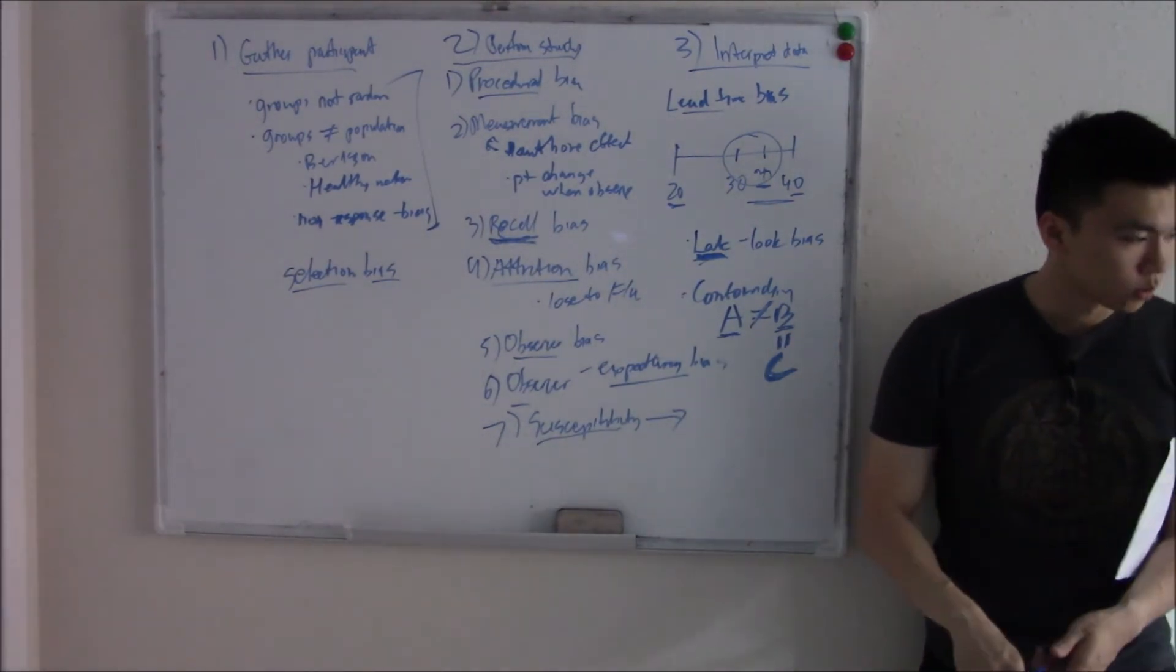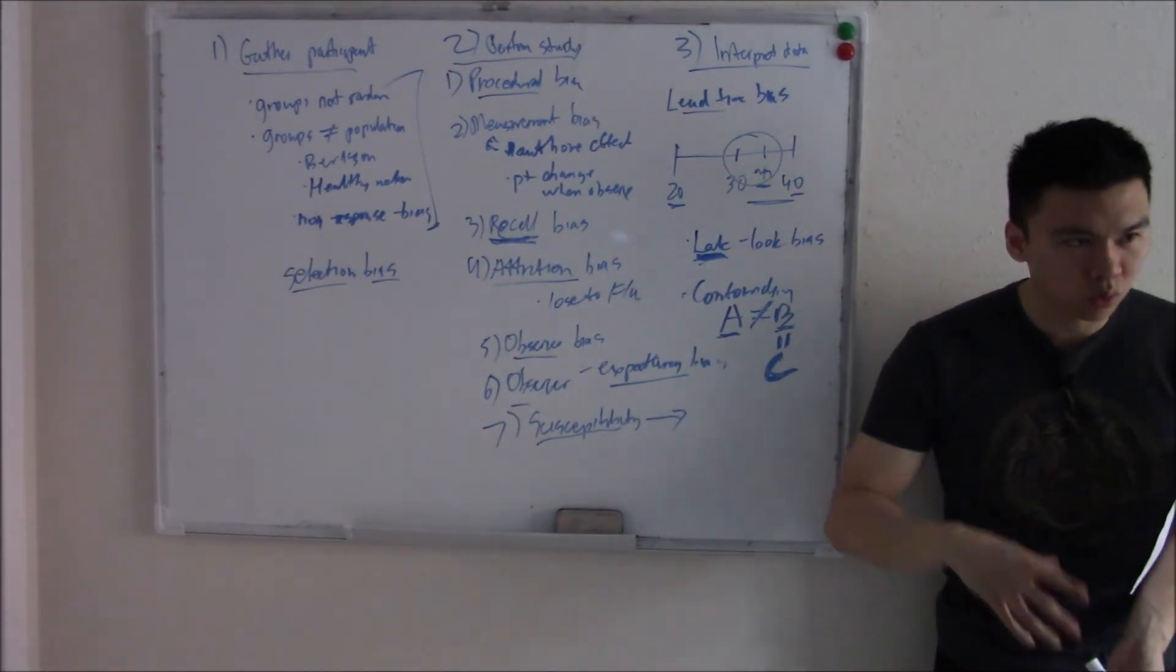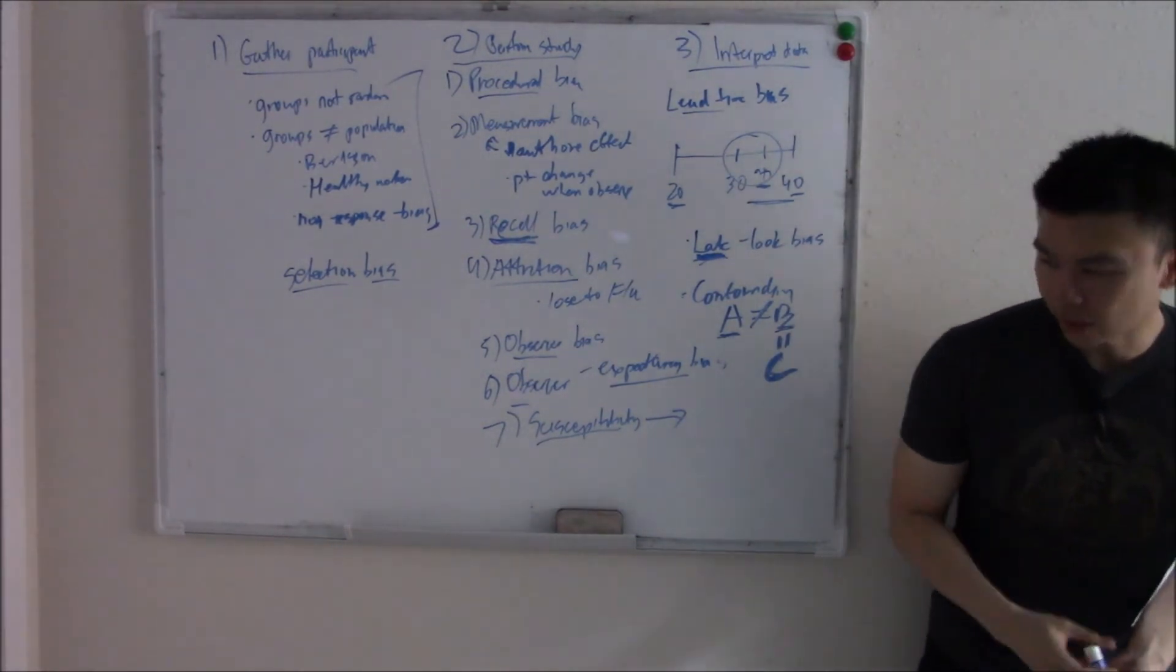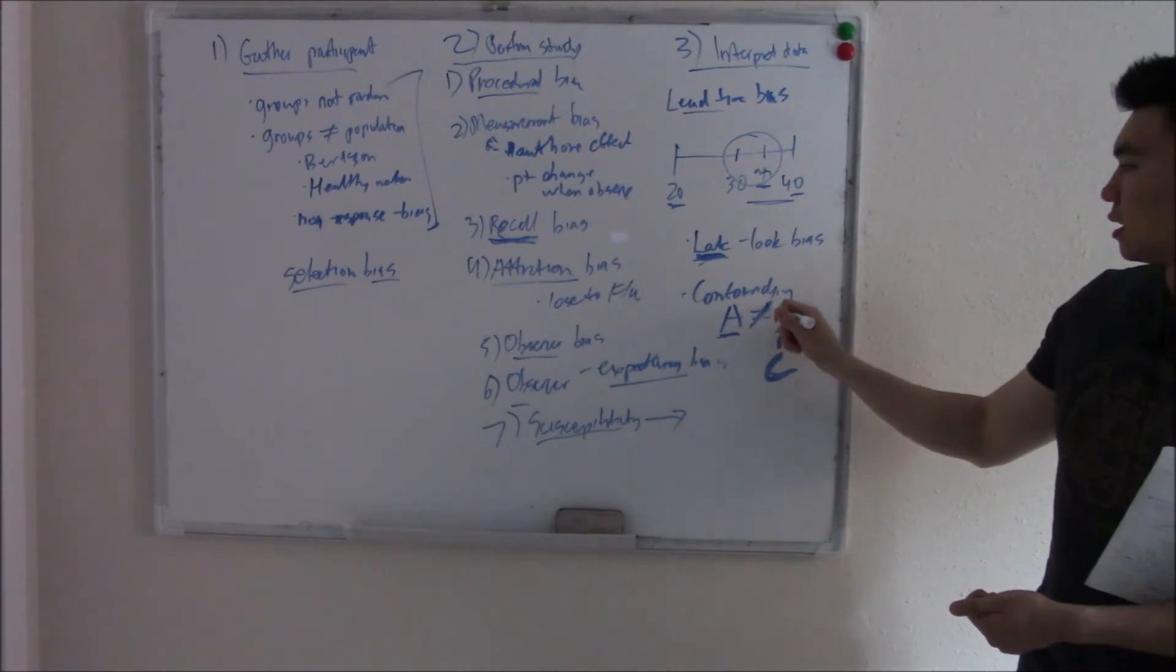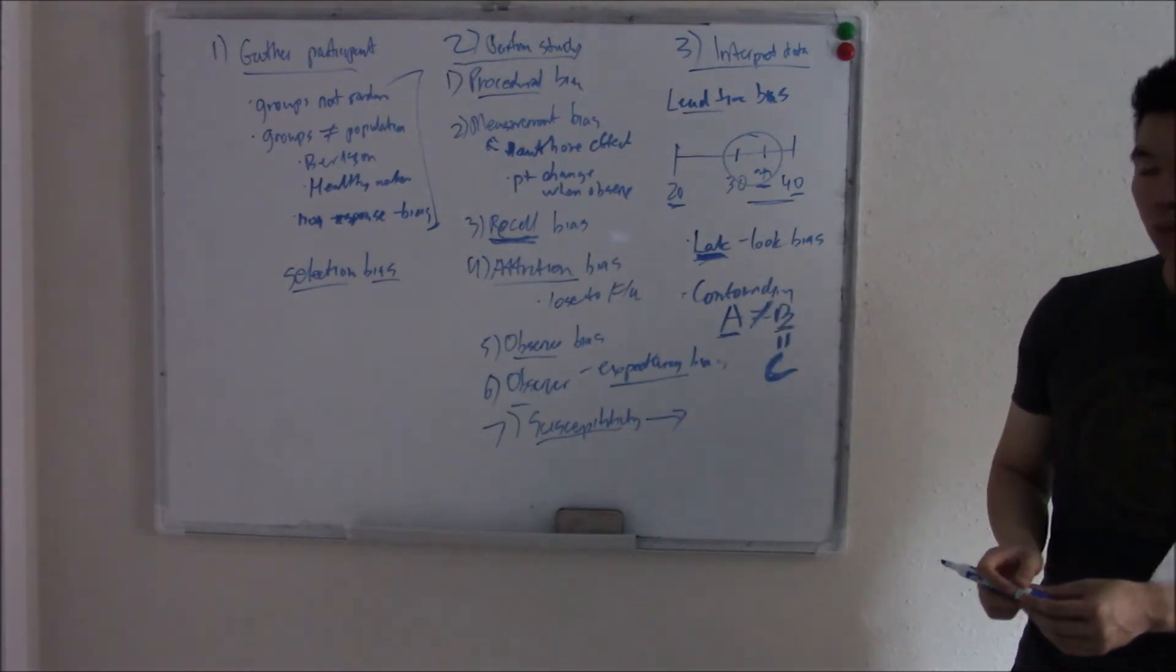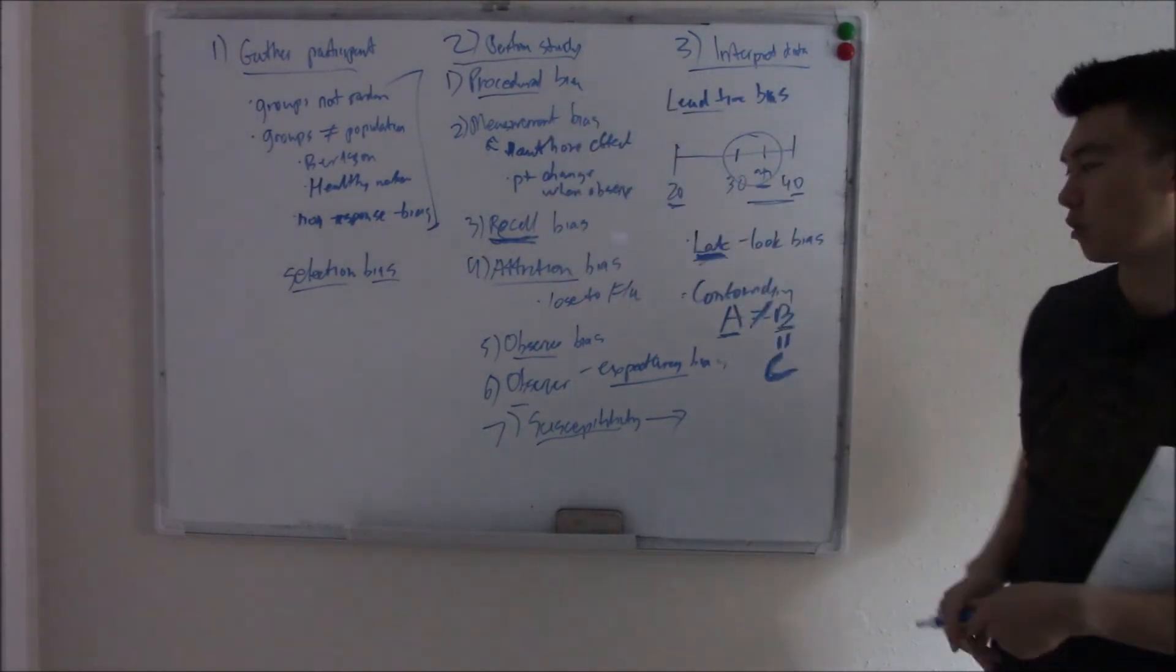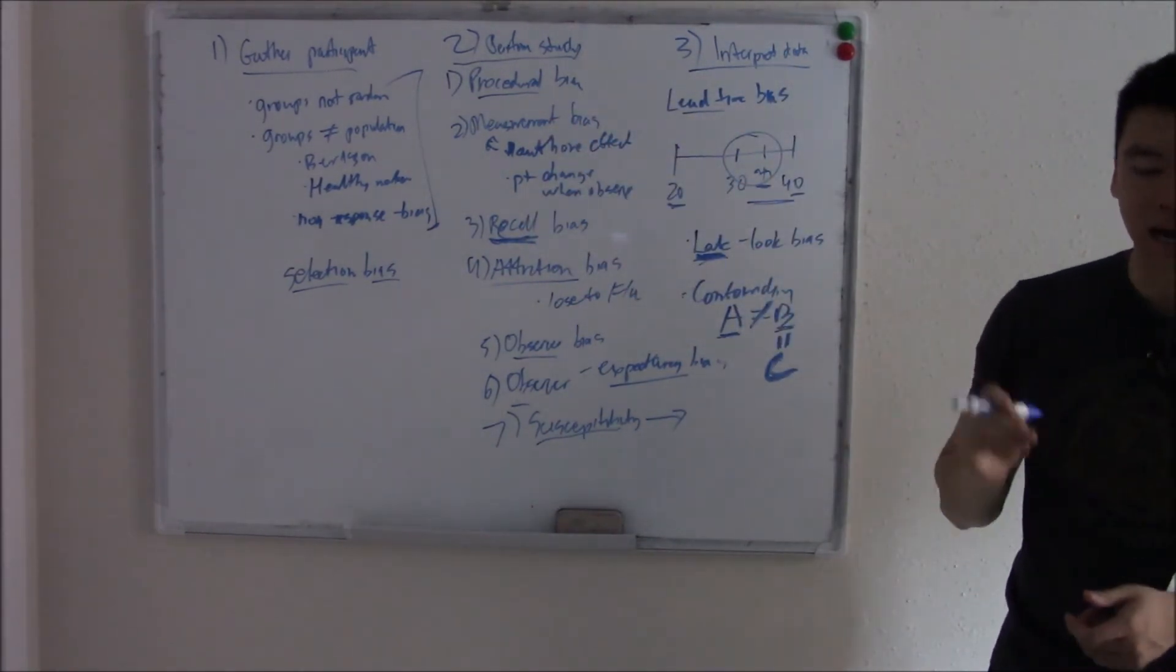So in our example, we really wanted cold exposure to cause lung cancer. Not knowing that it didn't. It just so happens that cold workers smoked more, and that's what caused lung cancer. Some outside factor that we didn't account for. That is confounding bias.